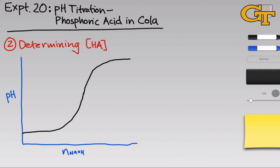We've already used titration to determine unknown concentrations — in the thermodynamics of borax dissolution experiment we determined the concentration of hydrochloric acid and the unknown borate concentration. We can do the same using pH titration data to determine the concentration of an acid HA. The point on the pH curve where the indicator would change color — where pH is increasing most rapidly — is in the middle of the titration curve where the slope is at a maximum. Mathematically, this is called a point of inflection.